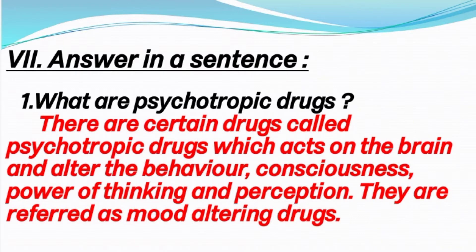First question: What are psychotropic drugs? Answer: There are certain drugs called psychotropic drugs which act on the brain and alter the behavior, consciousness, power of thinking and perception. They are referred to as mood-altering drugs.